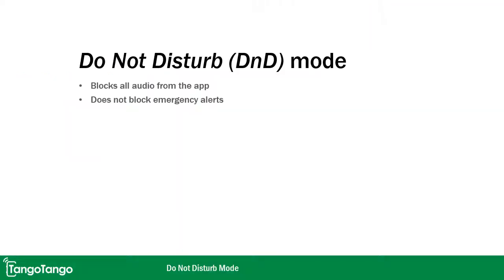Now let's look at Do Not Disturb mode. This blocks all audio coming from the app. However, it does not block audio for an emergency alert. So if you've got your app in Do Not Disturb mode and someone declares an emergency call, you're still going to get that notification and that audio.